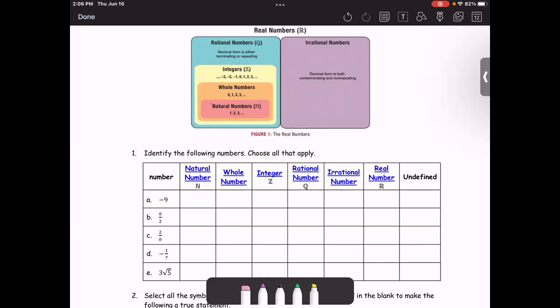Other numbers that are not integers are also in the rational numbers. So then, for the group of the rational number, it consists of either integer, whole number, or natural number. If it is the natural number, it's also the whole number, it's also an integer, and it's also the rational number.